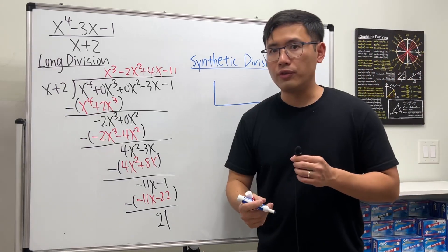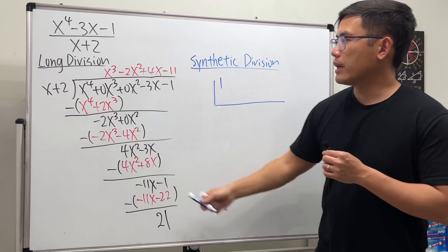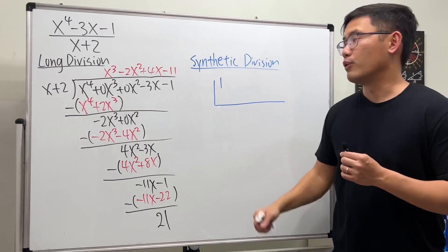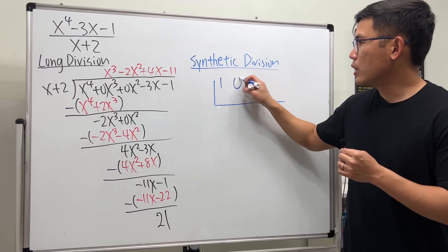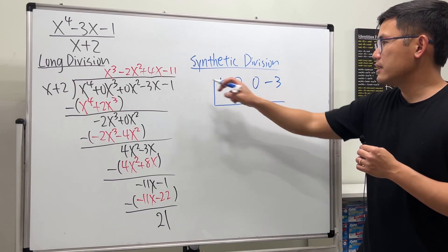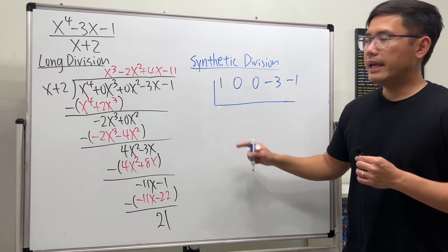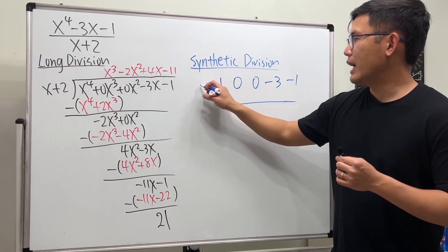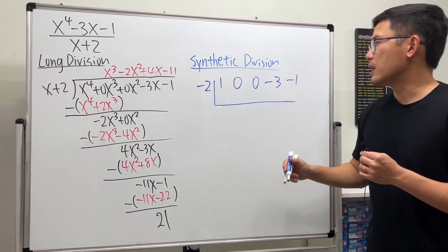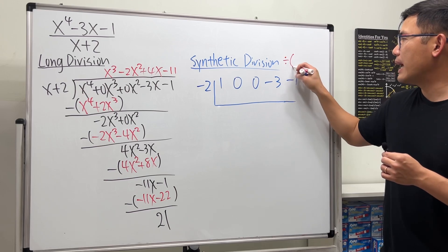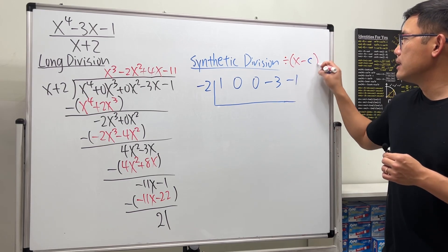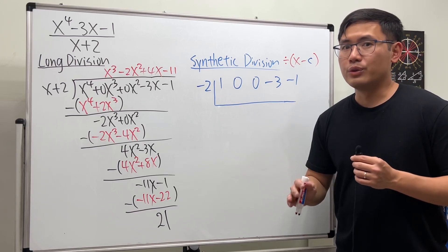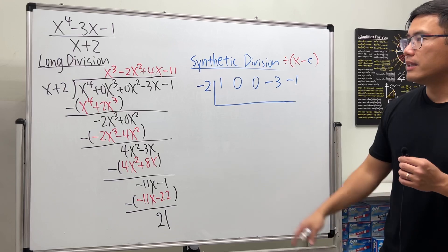All right. Draw the box like this. And on the top, just write down the coefficients. We have 1 to begin with. 1 to begin with. And then we don't have x to the third power. So make sure we put 0 just like this. Just write down the coefficients. So we have the 1. And then 0. 0. Negative 3. And the negative 1. And on the outside here, you see we are dividing by x plus 2. So you do the opposite. So we have negative 2.